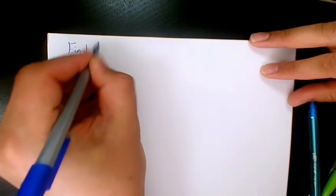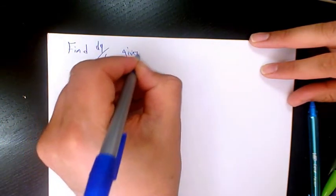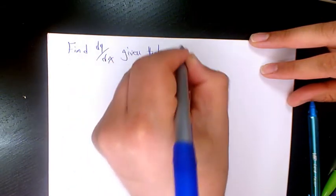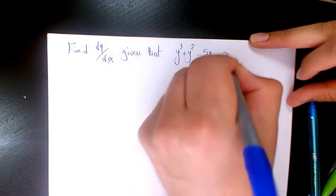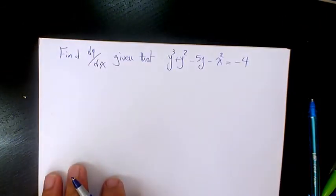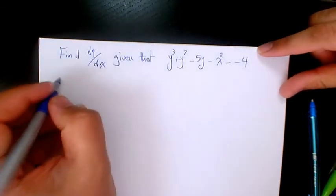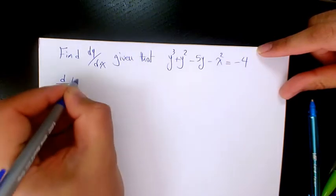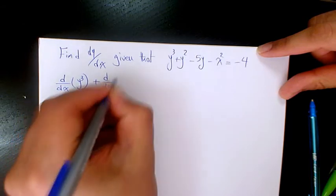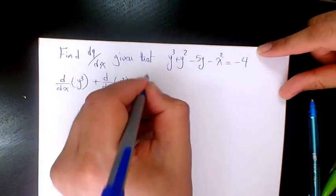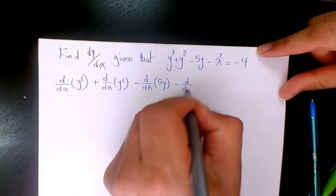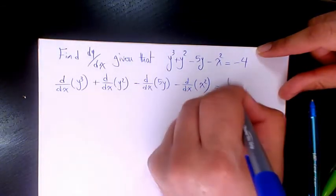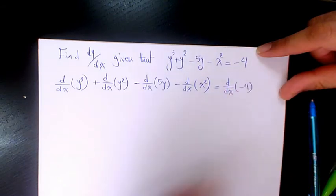Next example: find dy/dx given that x³ + y³ + y² - 5y - x² = -4. We differentiate each term: derivative of y³ with respect to x, plus derivative of y² with respect to x, minus derivative of 5y with respect to x, minus derivative of x² with respect to x, equals the derivative of -4 with respect to x.